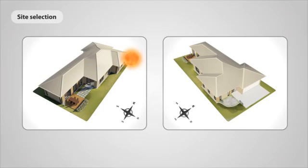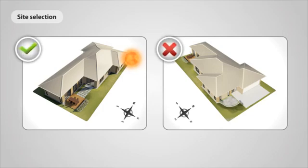Avoid long blocks that run north-south, as they make it harder to achieve a 6-star standard. Try to pick a block where you can have your living areas facing towards north on the block.